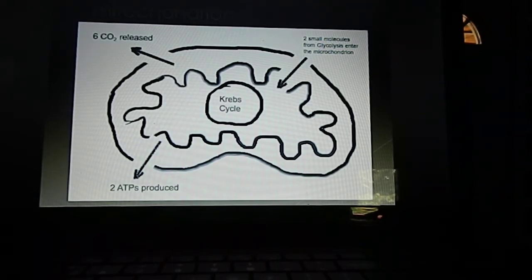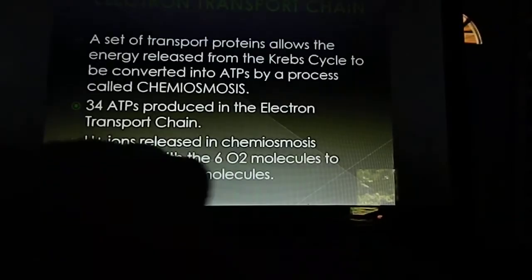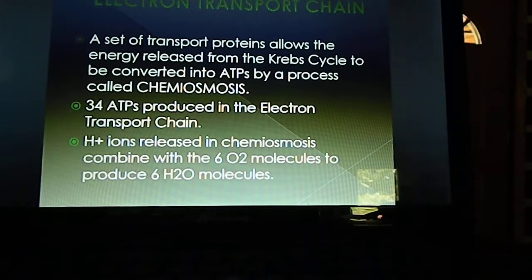The last part of cellular respiration is called the electron transport chain. This chain is a set of transport proteins that's embedded in the inner lining of the mitochondrion. Those hydrogen ions and electrons that are released during the Krebs cycle are going to be converted into ATPs in a process called chemiosmosis.